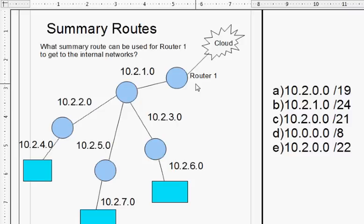So in the CCNA you're going to see a question like this: What summary route can be used for Router 1 to get to the internal networks? So you're Router 1, what summary route could you use? And then they'll give you some choices: a) the 10.2.0.0 network slash 19, b) the 10.2.1 network slash 24, c) the 10.2.0 network slash 21, d) the 10 network slash 8, or e) the 10.2 network slash 22.